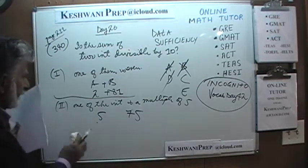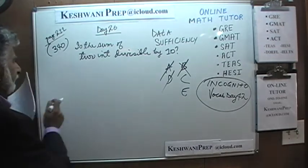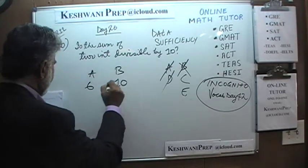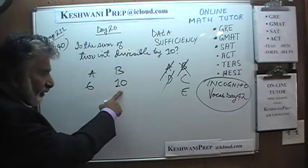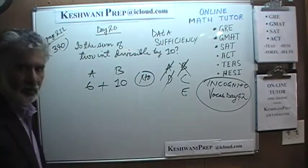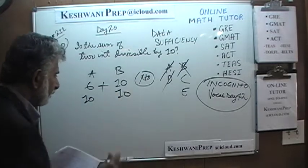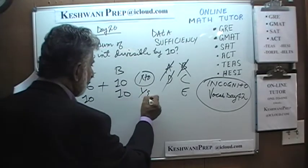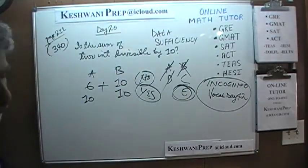Even when we put the two statements together — one integer is even and one is a multiple of 5 — we still can't tell. Maybe one is 6 and the other is 10: one is even, the other is a multiple of 5, but their sum is 16, not divisible by 10. Or maybe both are 10, in which case the sum is divisible by 10. You can't really tell. The answer is E.